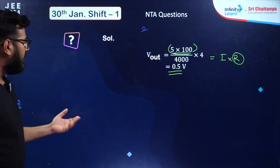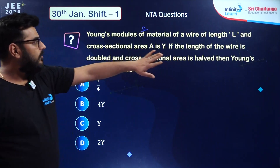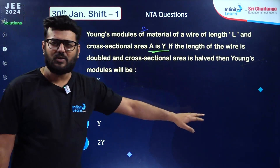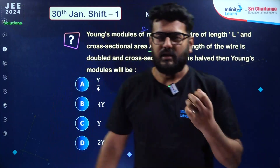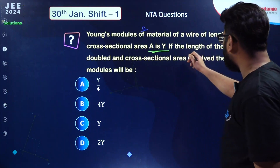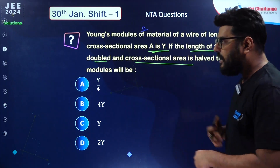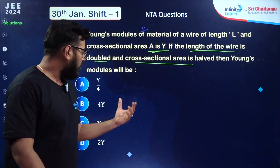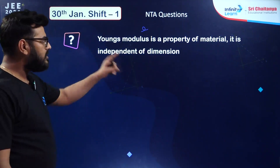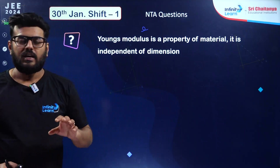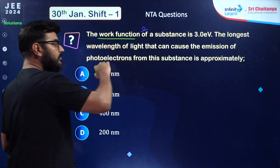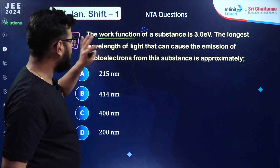The next question: Young's modulus of a material for a wire of length L and cross-sectional area A is Y. During the live discussion many students got this wrong. Young's modulus never changes — it does not change if the length of the wire is doubled or the cross-sectional area changes. Young's modulus is a property of the substance, a material property, not depending upon dimensions. The correct answer is option number C only.